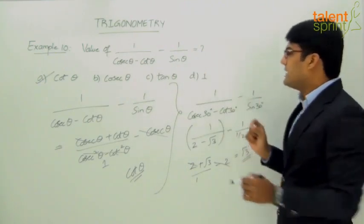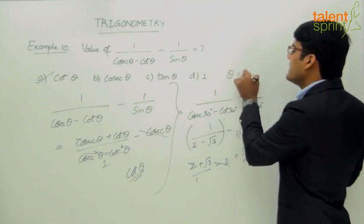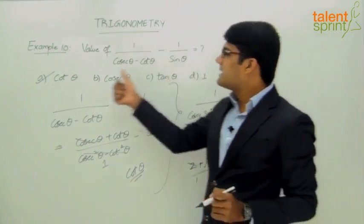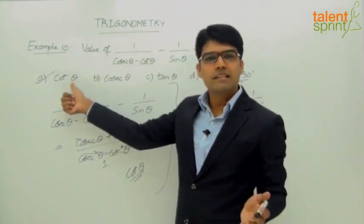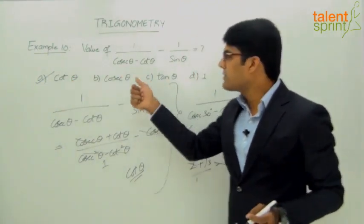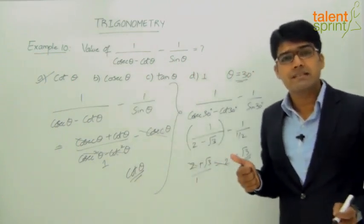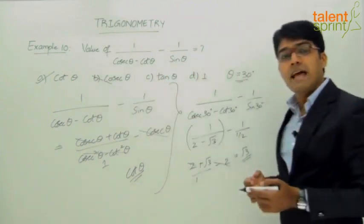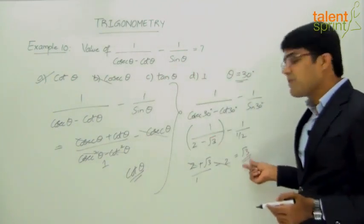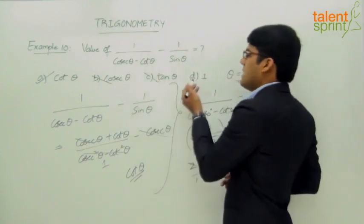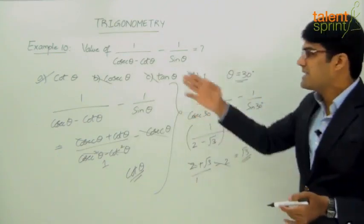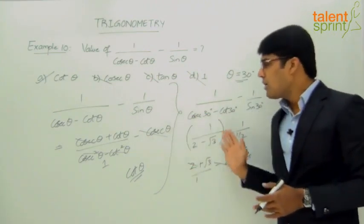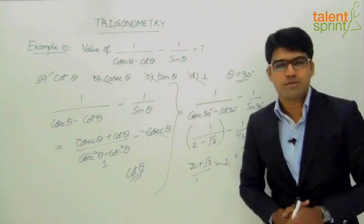Now substitute theta equals 30 degrees in the answer options and check which gives root 3. Cot 30 is root 3 — that matches, so option A is the answer. Cosecant 30 equals 2, so option B is ruled out. Tan 30 is 1 by root 3, not root 3, so option C is cancelled. Option D is also not the answer. Therefore, the answer is option A, cot theta. You can either follow the regular algebraic method or this smart substitution method, based on what is convenient to you.